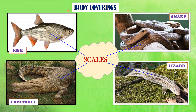The next adaptation in animals is body covering. Different animals have different body coverings which help them to survive in their environment. The first is scales. Bodies of fish, snakes, crocodiles and lizards are covered with scales, which help prevent water loss from their body. Fish are covered with overlapping scales that are waterproof.